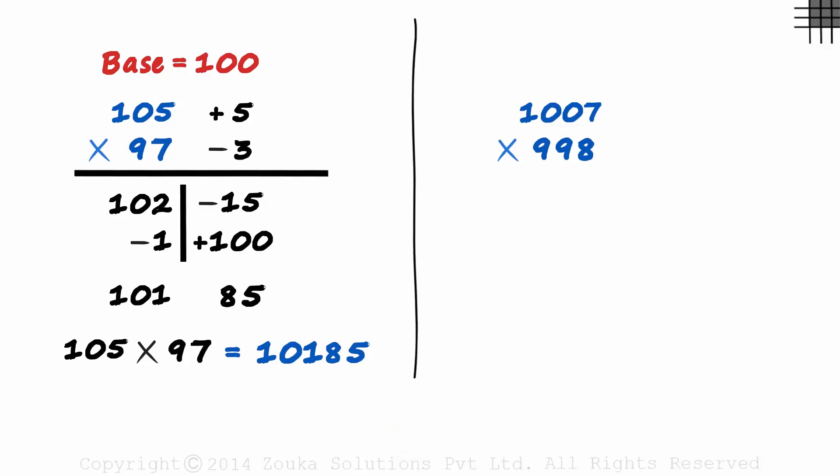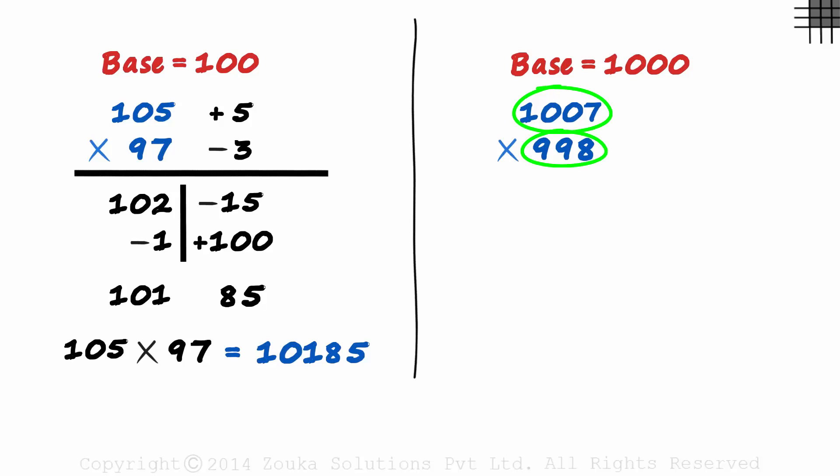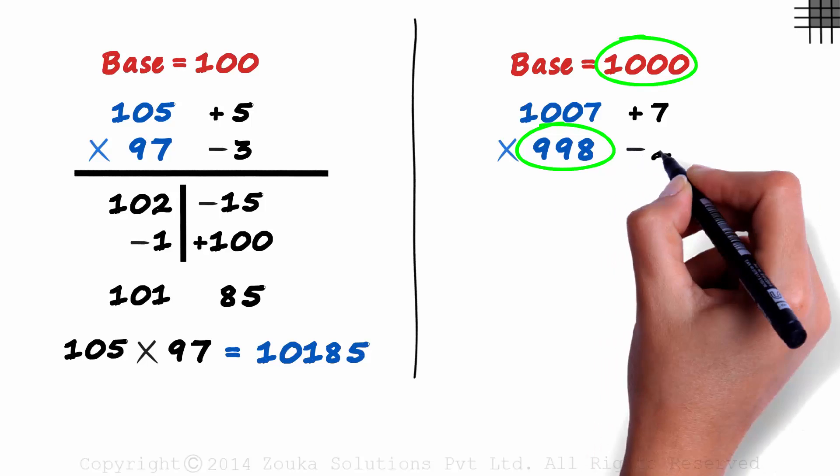We use the same technique. Base, deviations, sum and product. We can choose the base as 1000 as both numbers are very close to it. Finding the deviations should have been pretty easy. 1007 minus 1000 is 7 and 998 minus 1000 is minus 2.